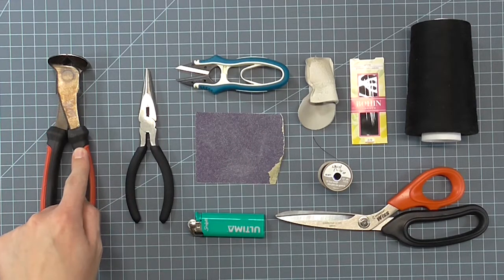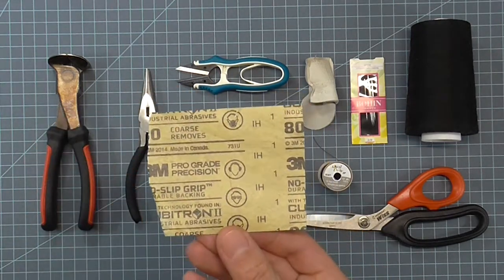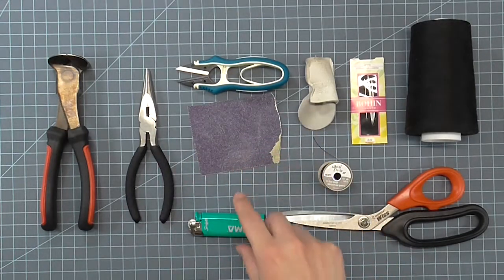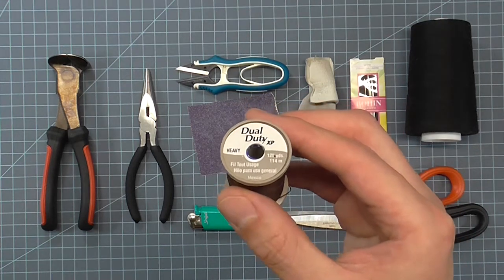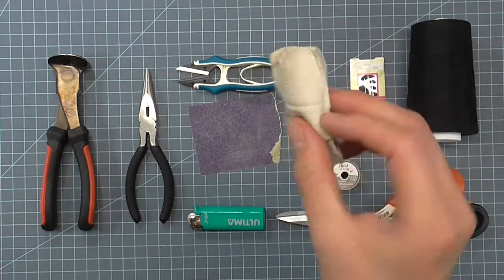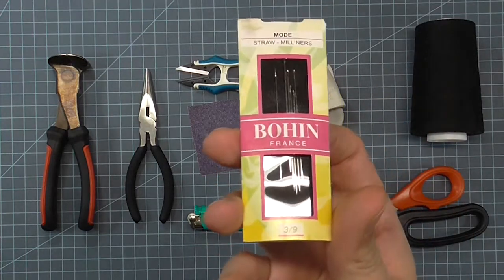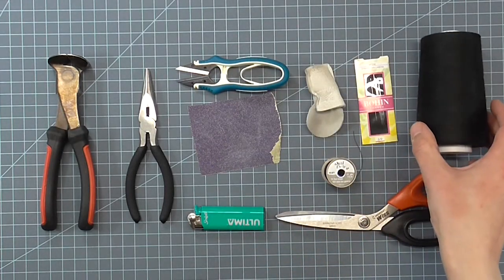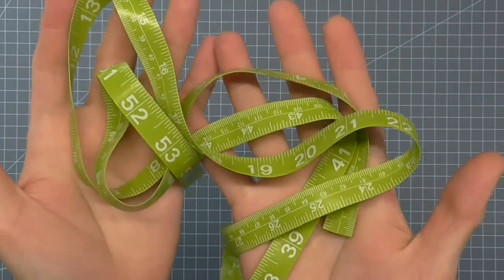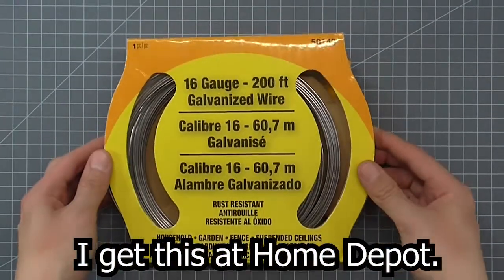Some basic supplies you're going to need are wire cutters, needle nose pliers, thread snips, a coarse grit 80 grit sandpaper, a lighter, sewing scissors, heavy-duty thread that matches your color, a thimble for sewing, millinery needles size 9s, and contrast sewing thread for the example so you can see the stitches.